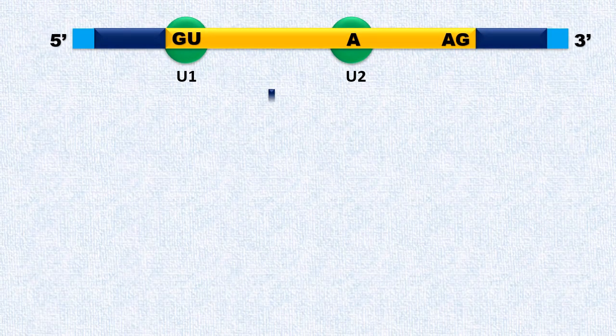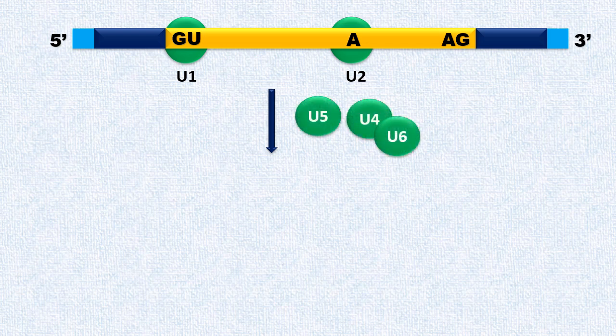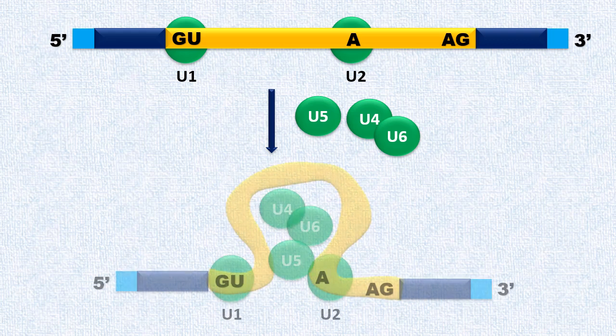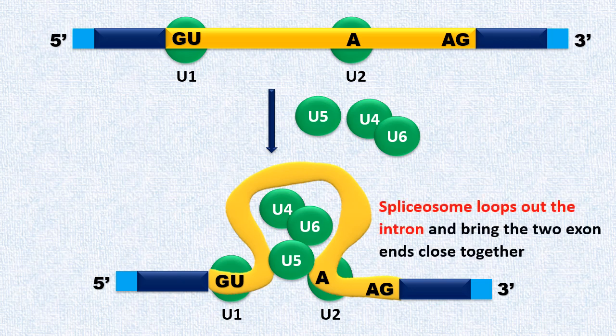In the second step, the remaining SNRPs, that is U5 and U4/U6, join the already bound U1 and U2. Thus, spliceosome is now assembled. Next, spliceosome loops out the intron and brings the two exon ends close together.